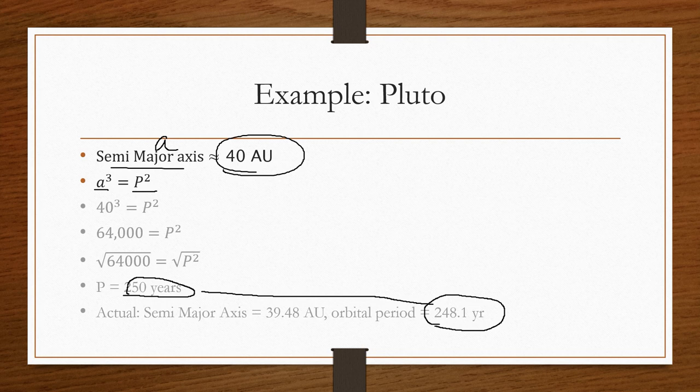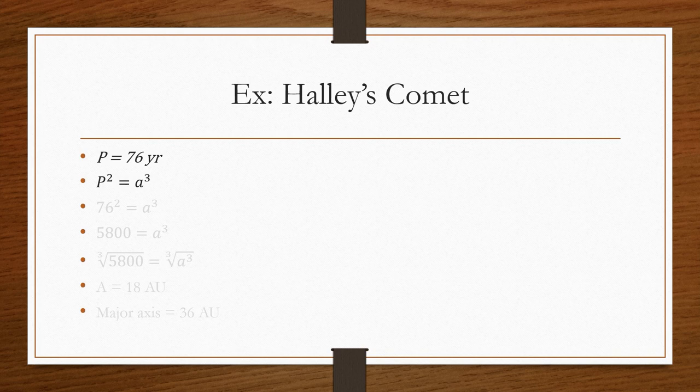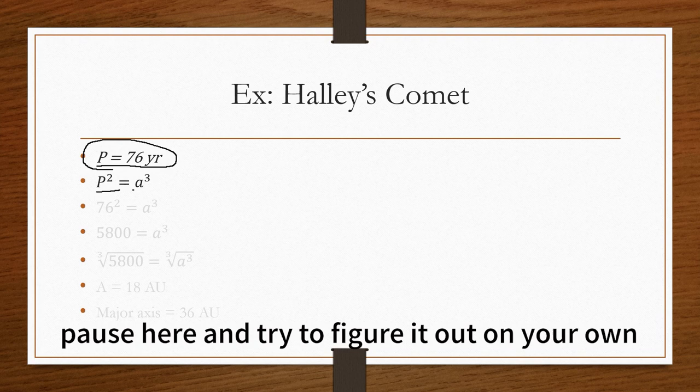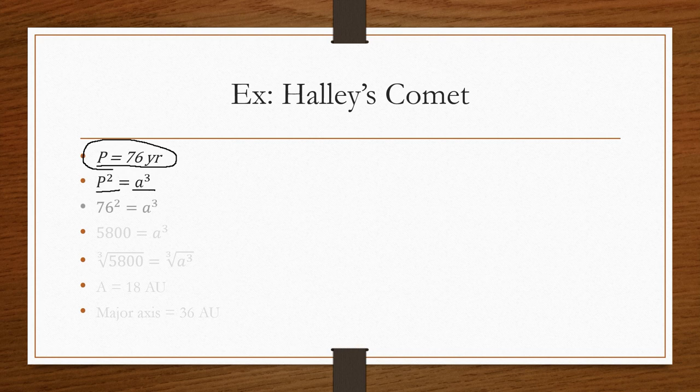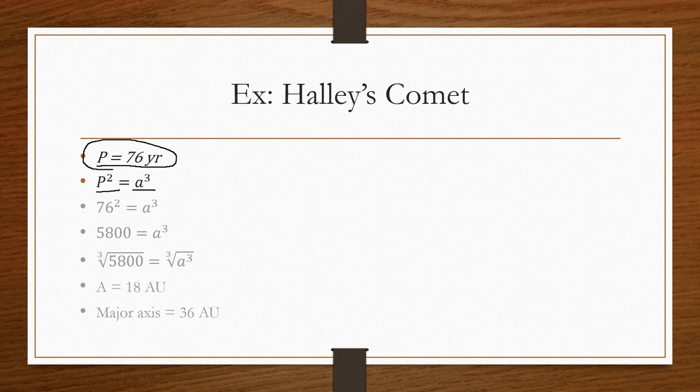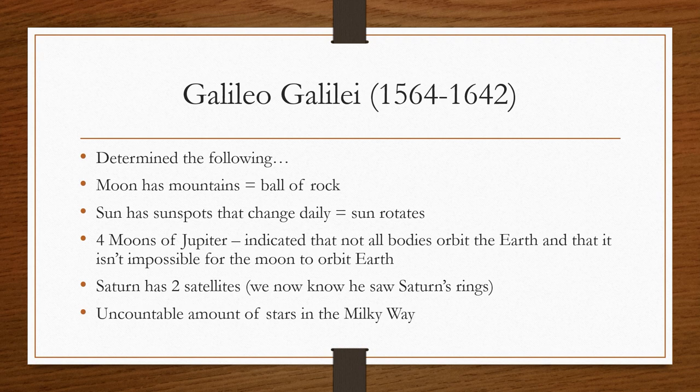Now, let's do Halley's Comet. Here, we know that its orbital period is 76 years. So, we're going to do it backwards. We have P squared equals A cubed. So, I want you to go ahead and do 76 squared. You should have gotten 76 squared to be 5,800. So, now we need to cube root it. You should have gotten 18, meaning that A is equal to 18 astronomical units. The major axis is 36 astronomical units. Therefore, Halley has an elliptical orbit bringing it out past Pluto into the Kuiper Belt.